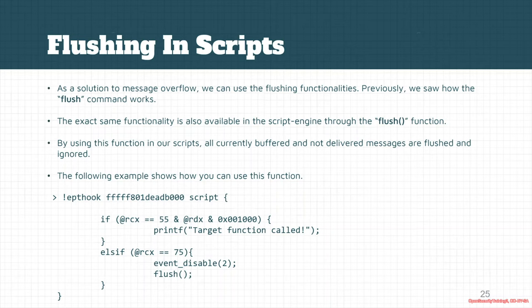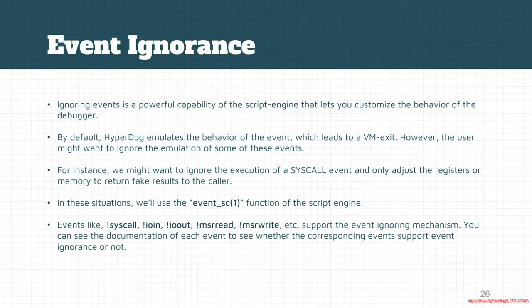Here is a simple example: I set an EPT hook at this address. If RDX equals 55, we print that the target function is called. But if the R6 register equals 75, the event will be disabled and the flush function will be called.